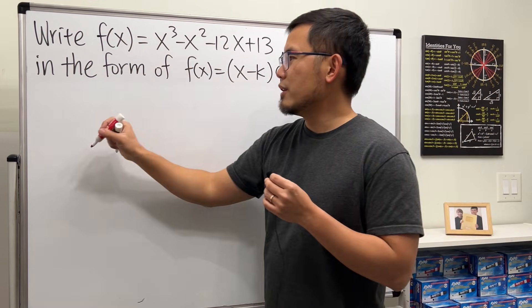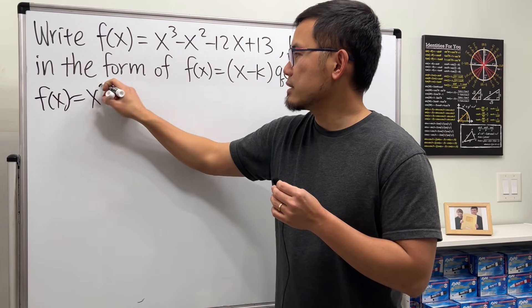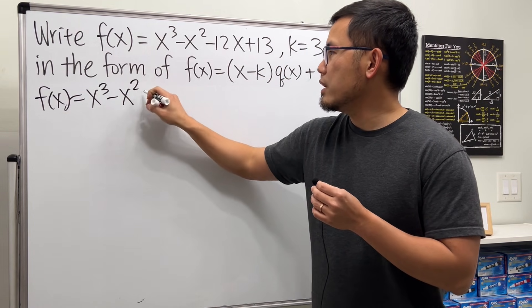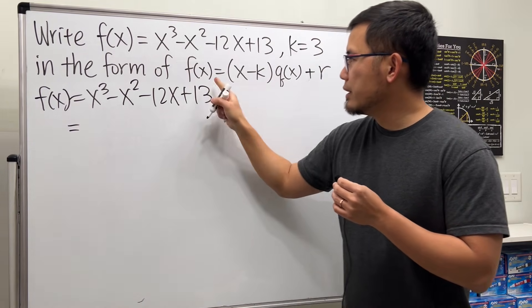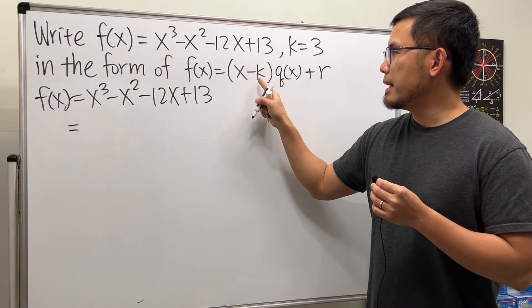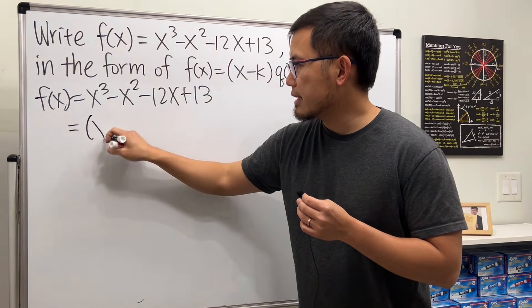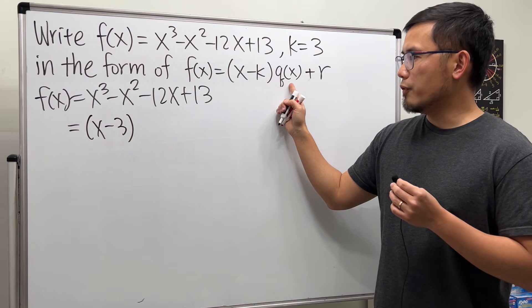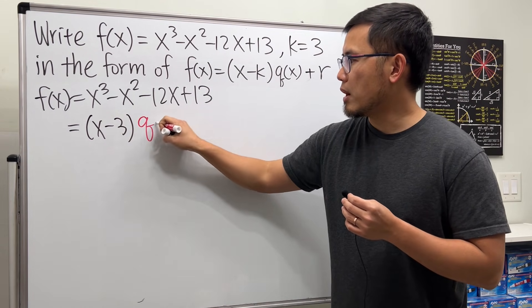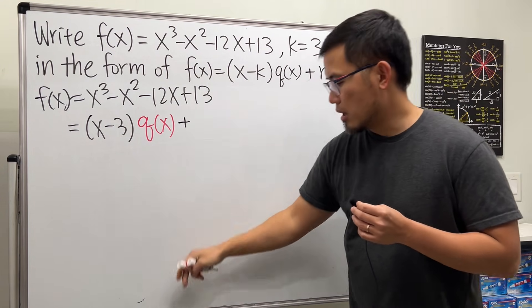So let me just write this down right here for you guys first. We have f of x, which is x cubed minus x squared minus 12x plus 13. And we are going to write this into this form, right? x minus k, and k is given to be 3. So we have x minus 3. And then we multiply by q of x, and this is the quotient part. After that, we are going to add the remainder, r.